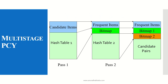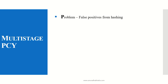This is the multi-stage PCY. The standard PCY works only for two passes, whereas multi-stage PCY works with a three-pass algorithm as well. In the frequent item sets, bitmaps are formed. In pass 2, if there are more than two-pair item sets or three-item sets formed, we go to a three-pass PCY — the multi-stage PCY — where bitmap 1 and bitmap 2 divide the data into number of bits for each candidate pair. The problem of false positives from the hashings has to be considered and removed; multiple rounds of hashing are needed.